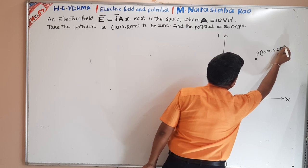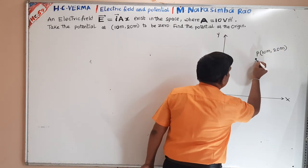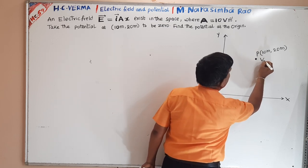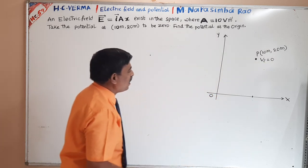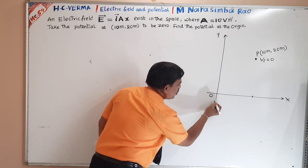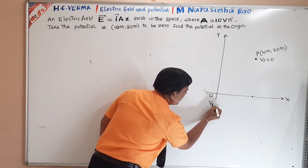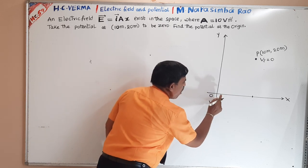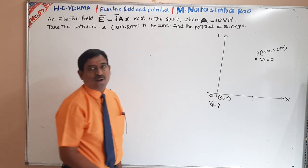The point is (10 meter, 20 meter). They told that at this point, the potential is 0. Now, this is the origin. I am taking it as (0, 0). At this point, you have to find the potential — what is the final potential they are asking.